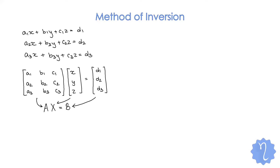We convert the system into matrix form. Then we apply the method of inversion, which we are studying in this video, or in the next video we will study the method of reduction. To apply the method of inversion — inversion means we will use the inverse here — we will pre-multiply by A inverse.